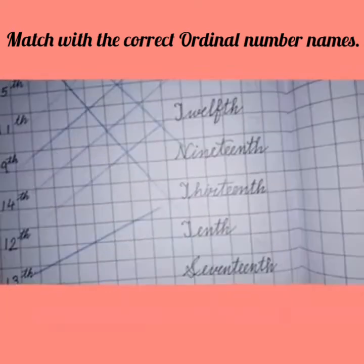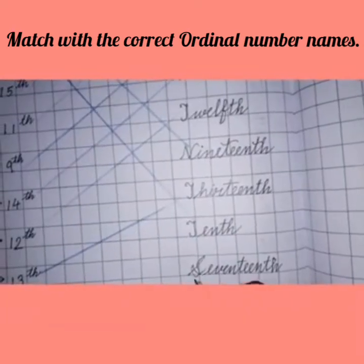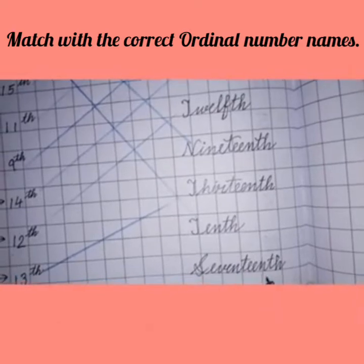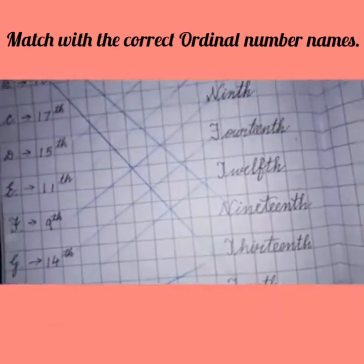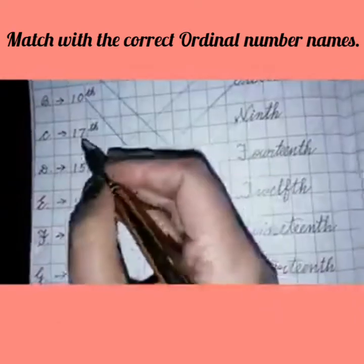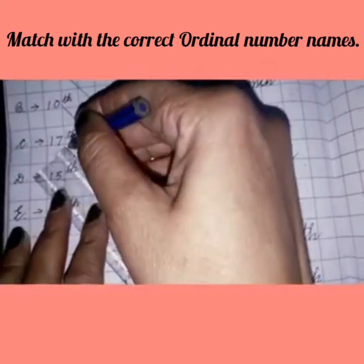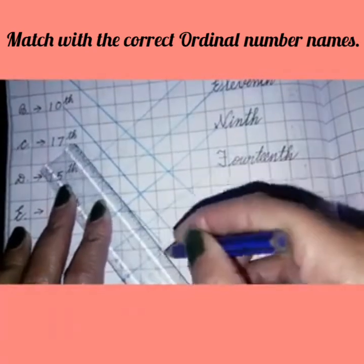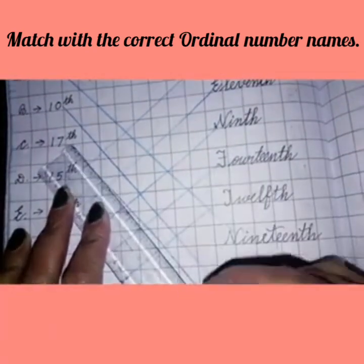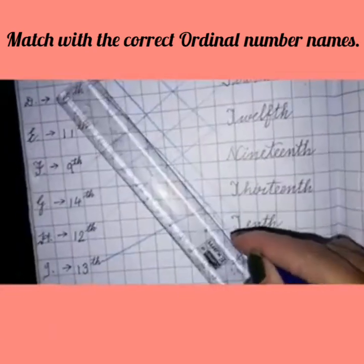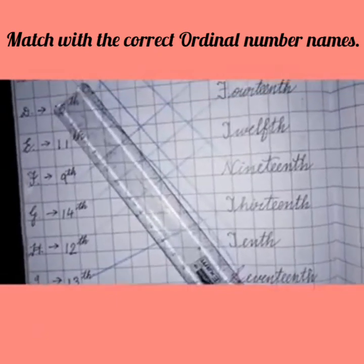Now come to the next number. 17th. So write the spelling. S-E-V-E-N-T-E-E-N-T-H 17th. Where is 17th in this part? This is 17th. So we will match this like this. See it?